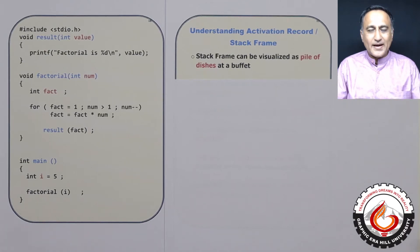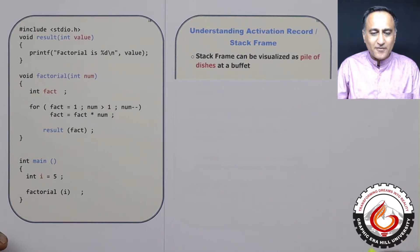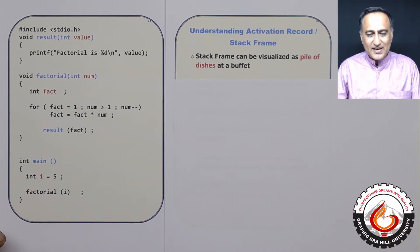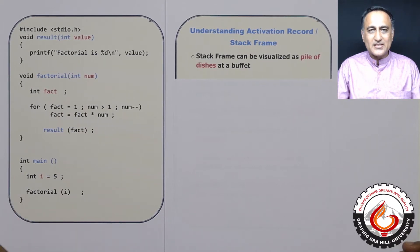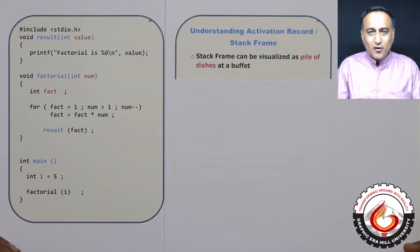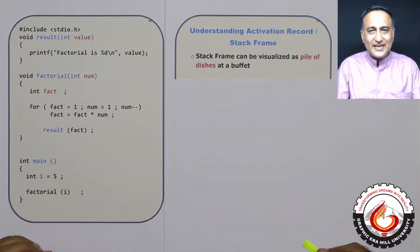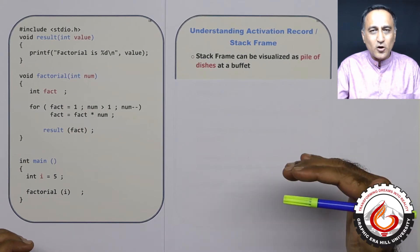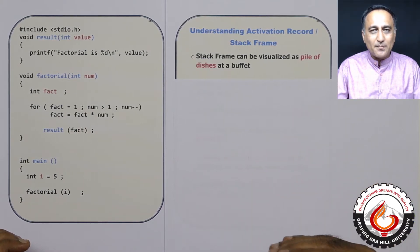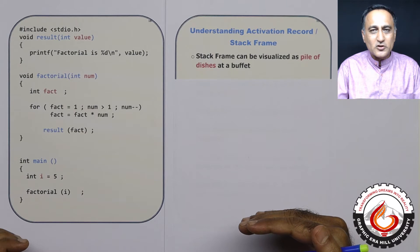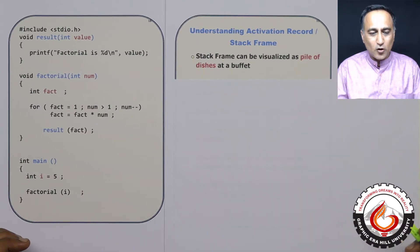We shall continue to talk about activation records, also known as stack frames, in a bit more detail, because understanding the activation record or stack frame is critical to understanding recursion. You can think of a box maintaining details of all functions being called, and in that box we are maintaining certain records of what all functions are being called.